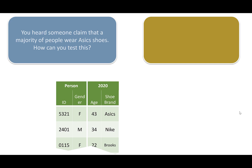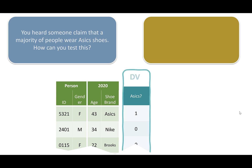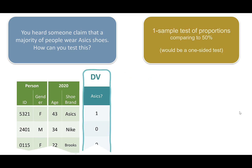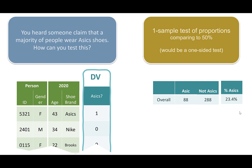So you heard someone claim that a majority of people wear ASIC shoes. How can you test this? You can make a column just like we did for Nike that says ASICs — one or zero. This is really our only variable. If we summarize this data, 88 wear ASICs and 288 didn't wear ASICs — that's about 23.4%. Is this different than 50%? This is where you use a one-sample test of proportions, and you would compare it to 50% with a one-sided test: is it equal to or greater than 50% of people wearing ASICs in the real data? So a one-by-two table is a one-sample test of proportions, and a two-by-two is a two-sample test of proportions.